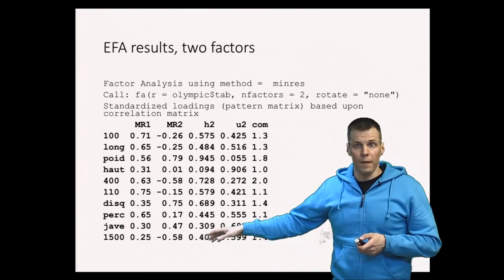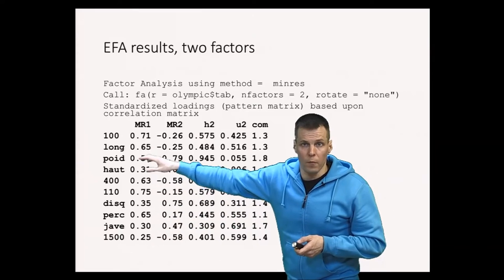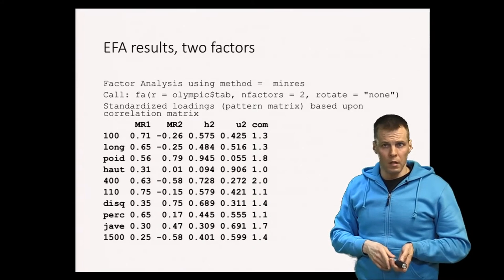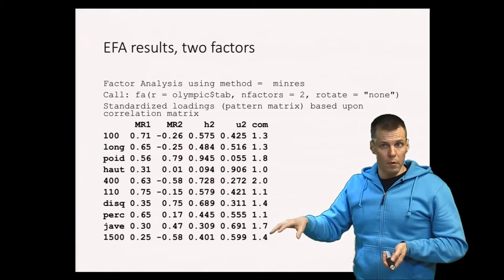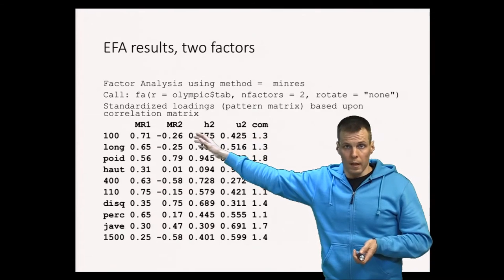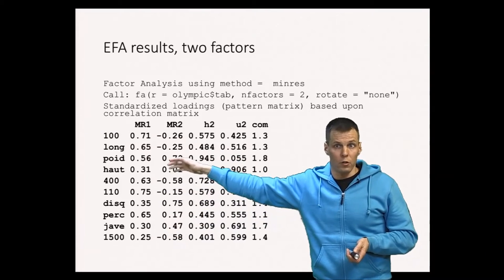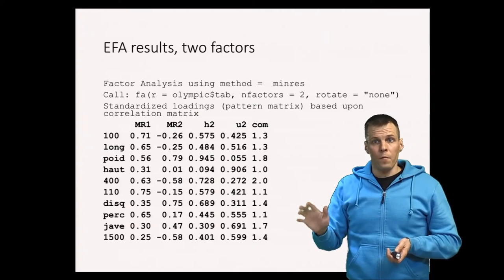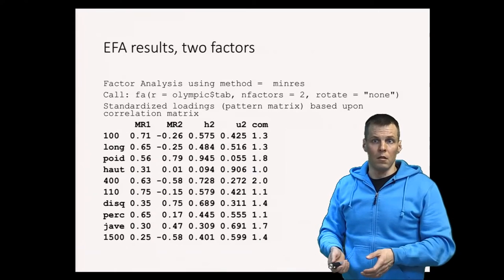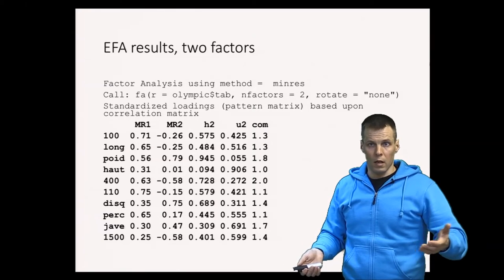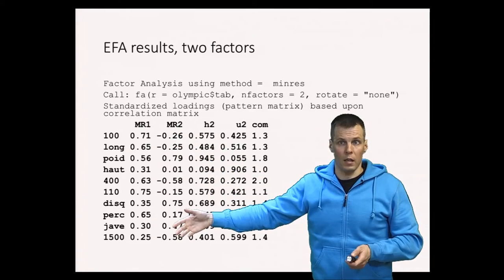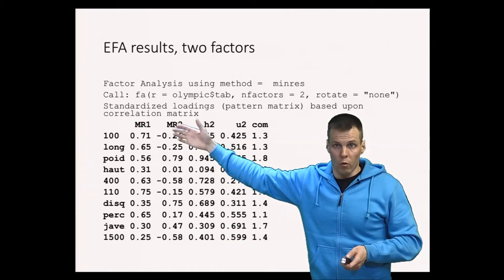After reverse scoring, every indicator loads positively on the first factor, though the magnitude of the loadings differ. How do we interpret the first factor? All indicators are positively associated with something — what is the underlying dimension? Since everything correlates positively with the first factor, the first factor basically represents how good the athlete is. If you are a good athlete, you perform better in all of these sports, so good athletes are expected to outperform poor athletes — therefore all items are positively correlated.